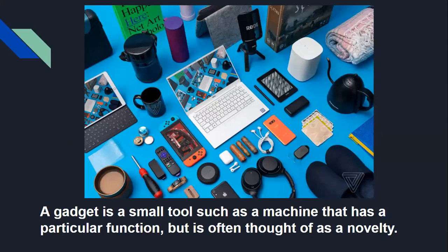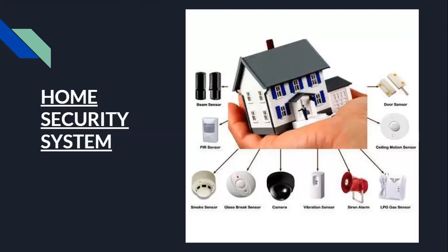In the picture, you can see we have a mobile, a remote, and a laptop — these are all devices that help us and make our life easier. Home security system — at some places we have installed CCTV cameras for security. A home security system is a network of devices that work together to secure your home.